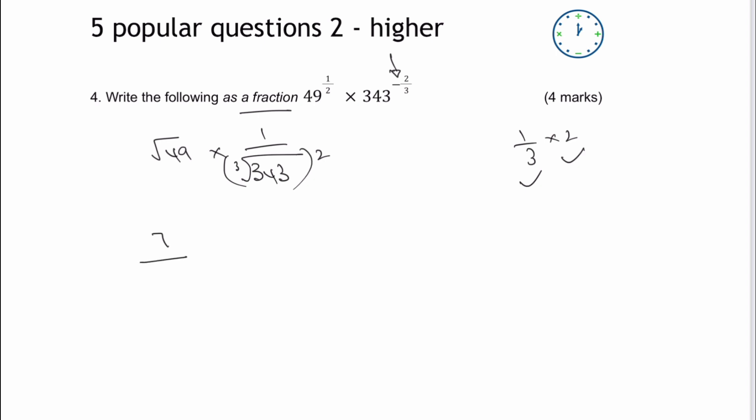And then underneath, I've got the cube root of 343, which is actually 7 again, but don't forget that's going to be squared. So what I end up with is 7 over 49, and if I want to reduce that, that's going to give me 1 over 7, which is the answer to this particular question.